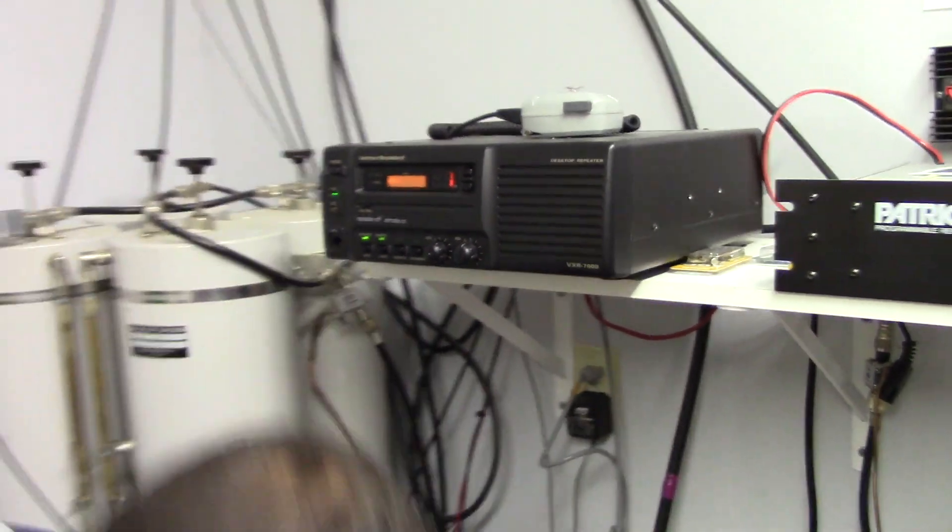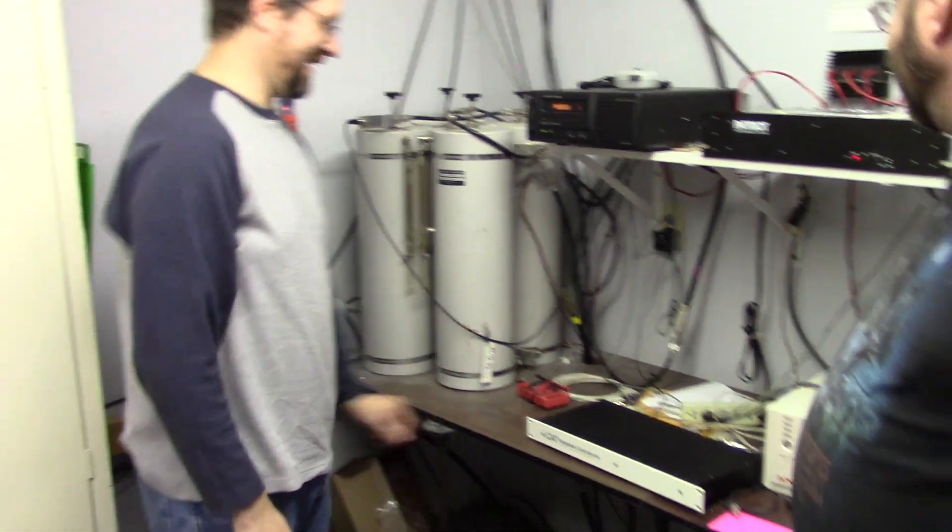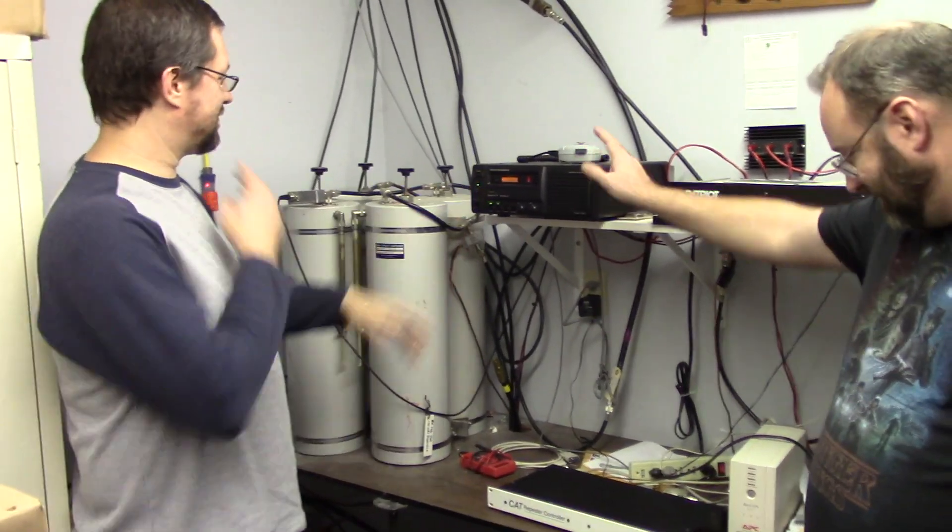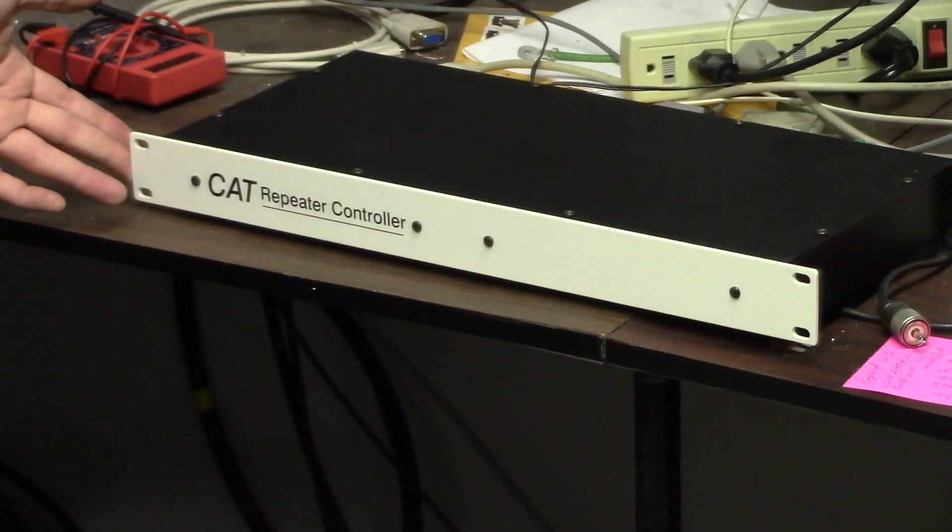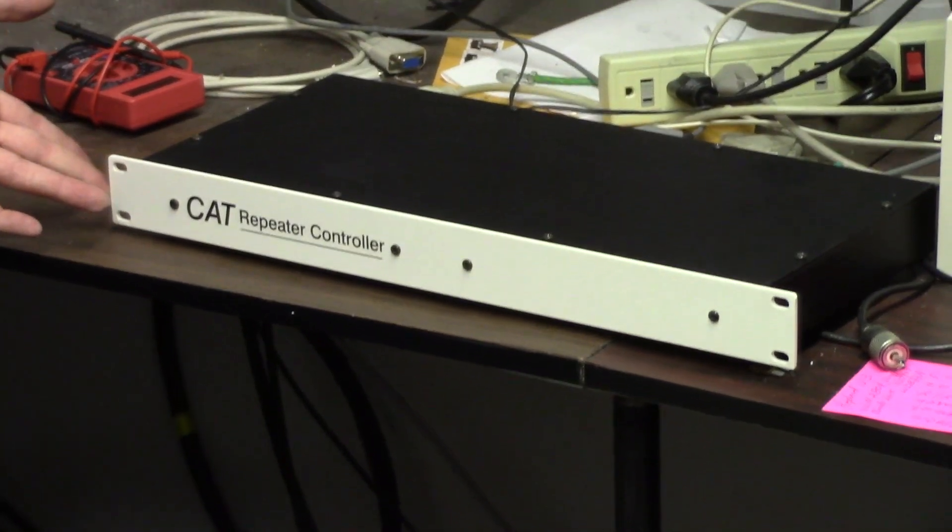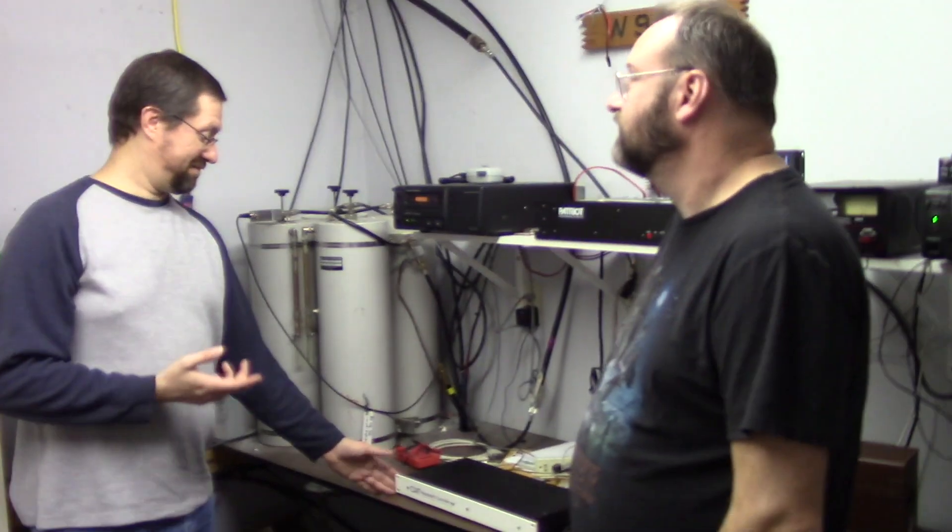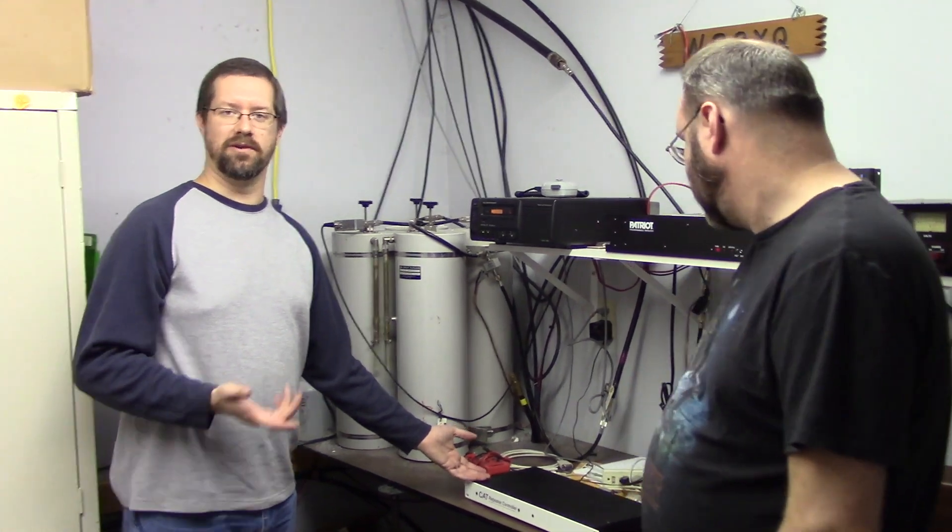One thing we ought to cover here. So this connects to this, and this has a little board in it. This is a Computer Automation Technologies repeater controller, a company that recently went out of business actually. And the CAT has an interface for a telephone line. It's called an auto patch. You can make phone calls with it.